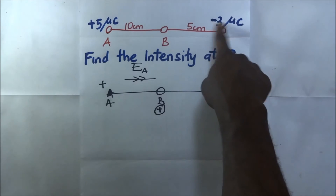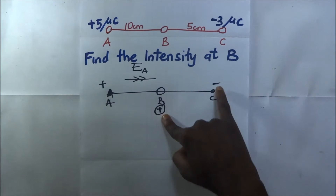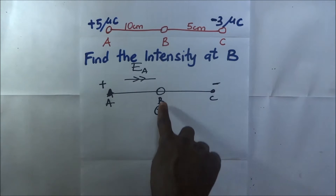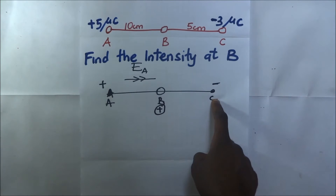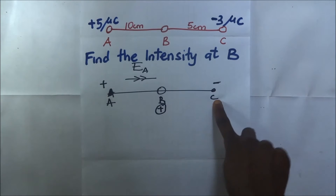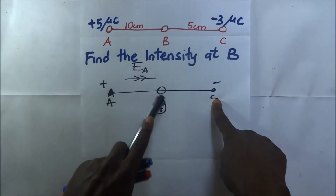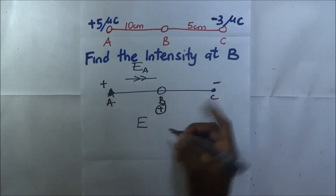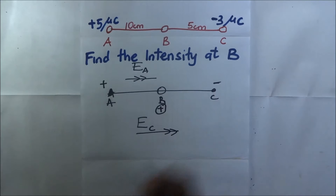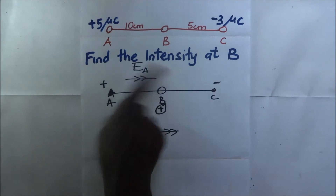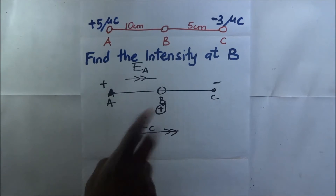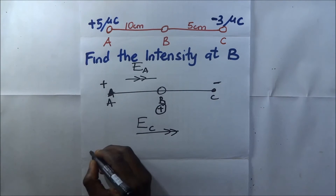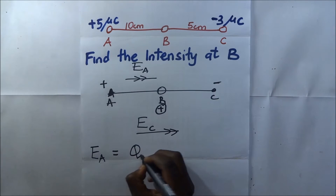Since B is positive and A is positive, there is repulsion between A and B, so the intensity at B due to A acts in the direction away from A. Looking at point C — it is negatively charged (negative three microcoulombs) and B is positive — since these are unlike charges they will attract, so the intensity at B due to C acts toward C. Both intensities are acting in the same direction, so we simply add the two to find the total intensity.